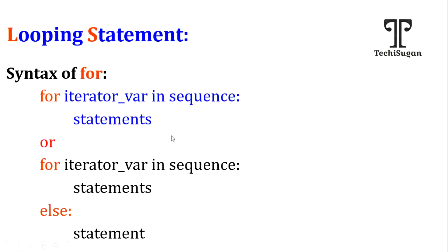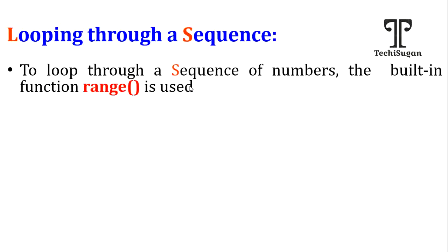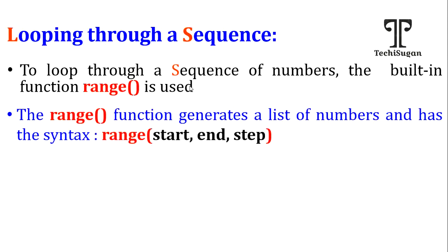Now let us understand what is this sequence — what are you going to give here? In the sequence part, I can give a function called range. This range function, since the for loop acts as an iterable, is used to access a range of values. This function is a predefined function with three parameters: the first parameter is the start parameter, the second is the end parameter, and the last is the step parameter — how many steps you want to move for each iteration.